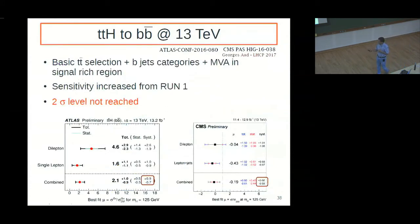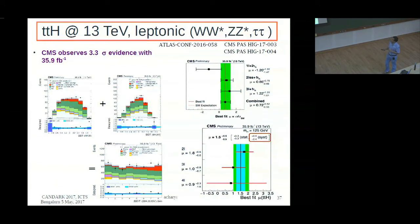And then finally, the status of Higgs to BB bar. One requires a basic ttbar selection. And divides the analysis in various BDT categories. And then uses MVA-based analysis in each signal region. The sensitivity has increased compared to run one. But two sigma level is not yet reached. These are some of the highlights. The di-lepton channel. So the green is statistical. And the black error bar is the total. This is from the di-lepton channel. This is single lepton. And the combined is here for the mu values from this channel.